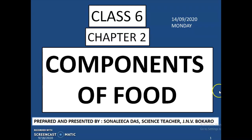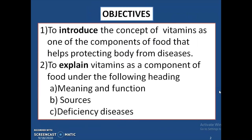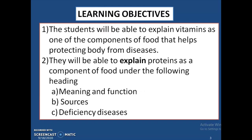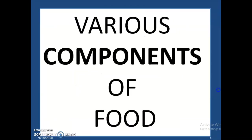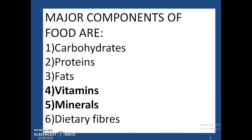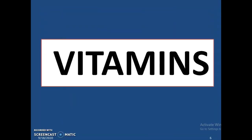Components of food, Chapter 2, Class 6. The objectives of this lesson are to introduce the concept of vitamins as one of the components of food that help protect the body from diseases. The lesson will also explain the meaning, function, sources, and deficiency diseases caused by the deficiency of vitamins. Various components of food are carbohydrates, proteins, fats, vitamins, minerals, and dietary fibers. Vitamins and minerals are known as protective food.